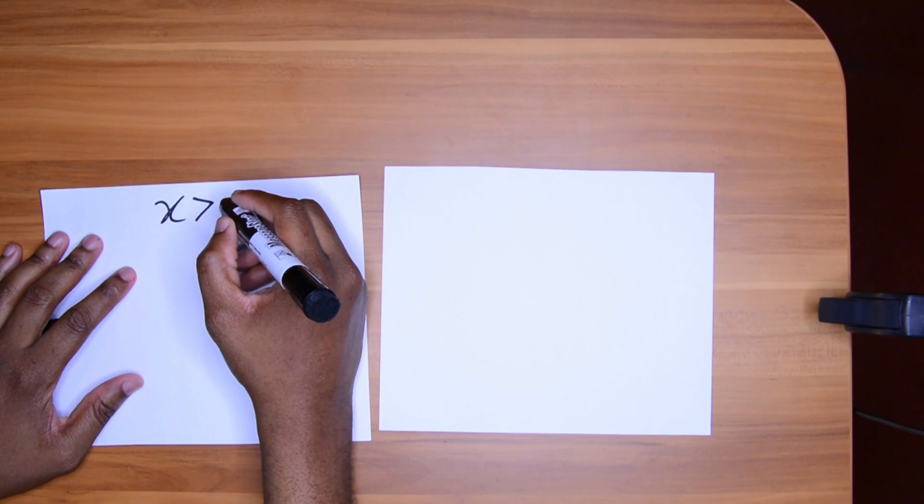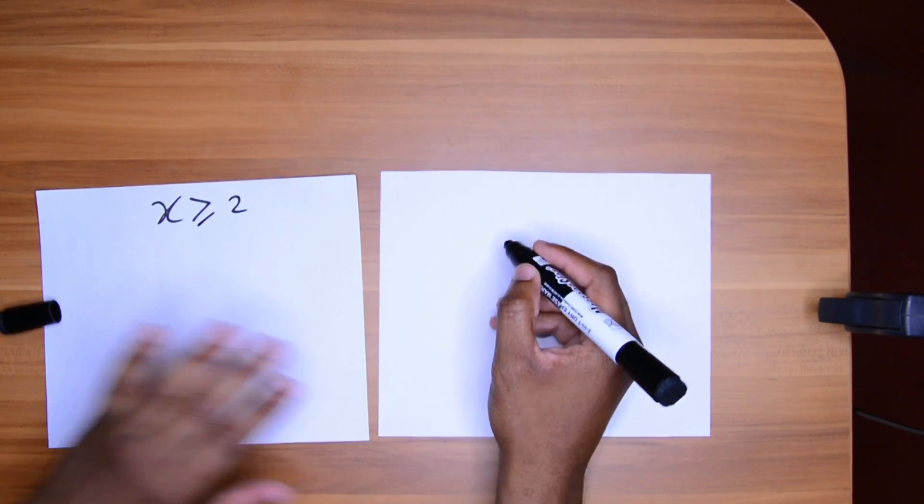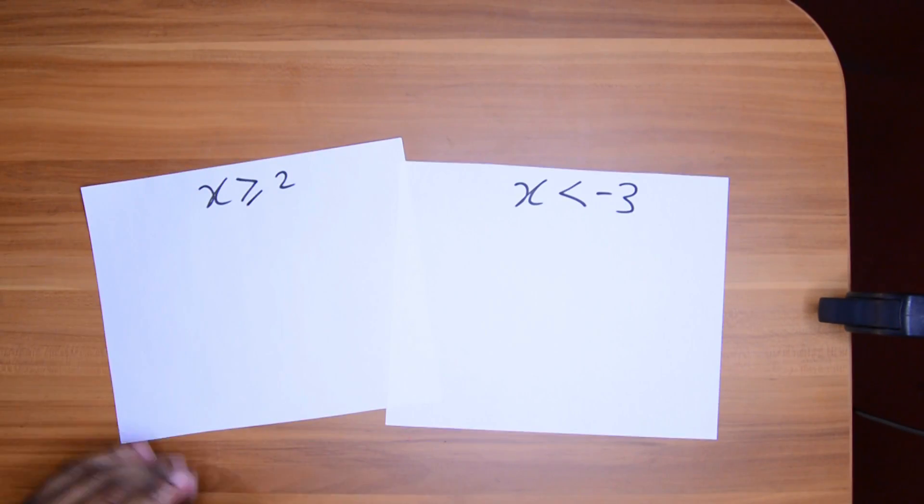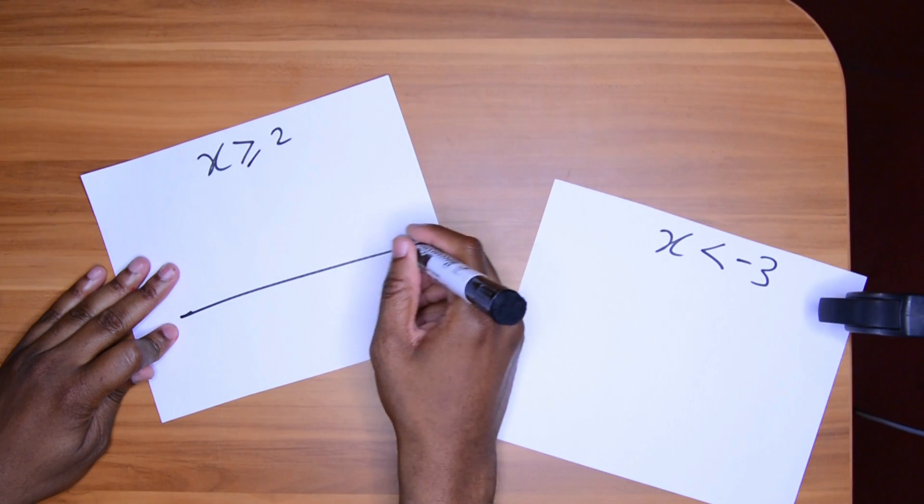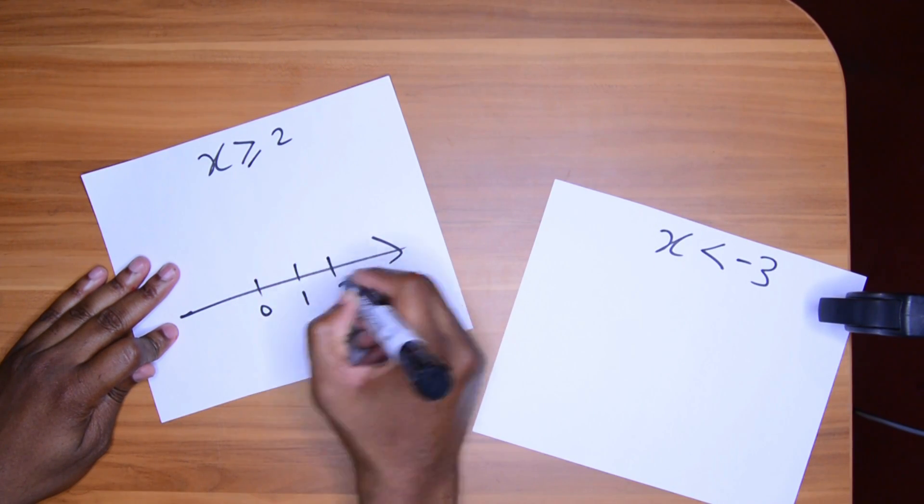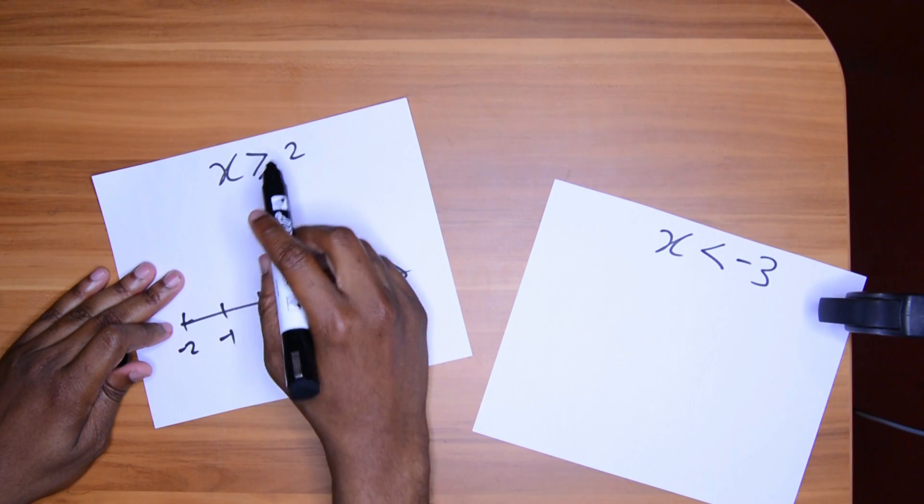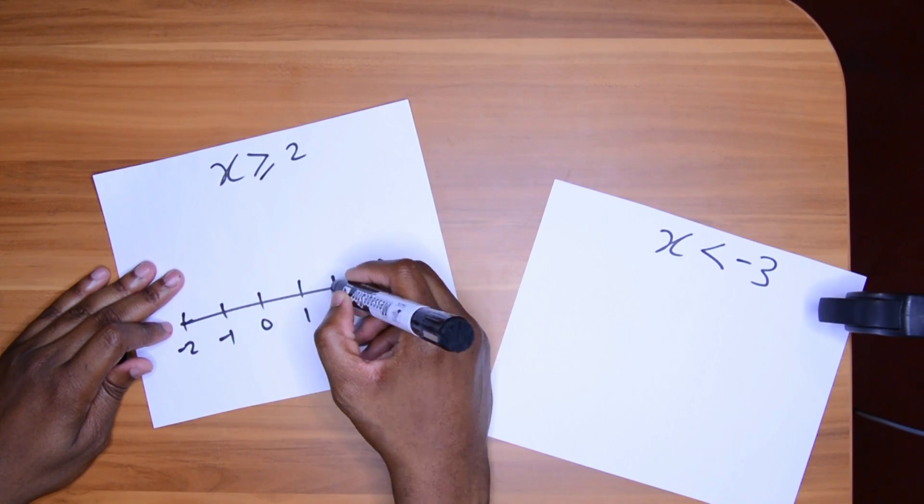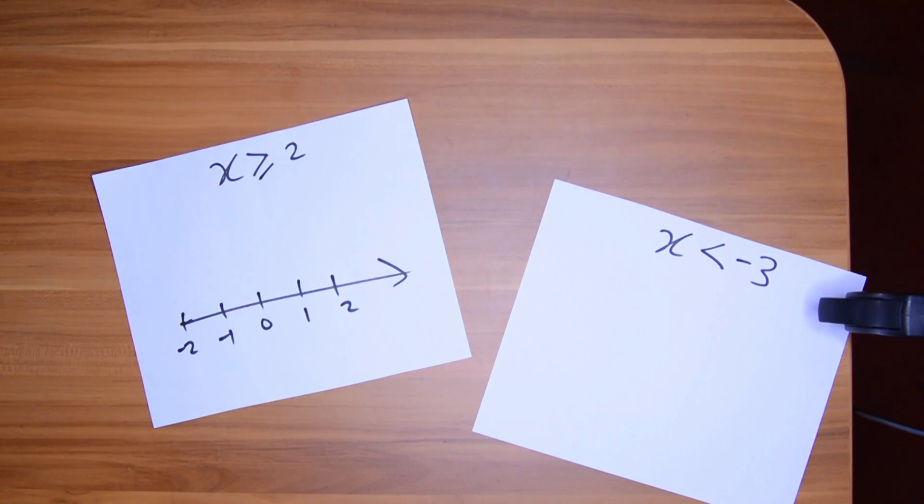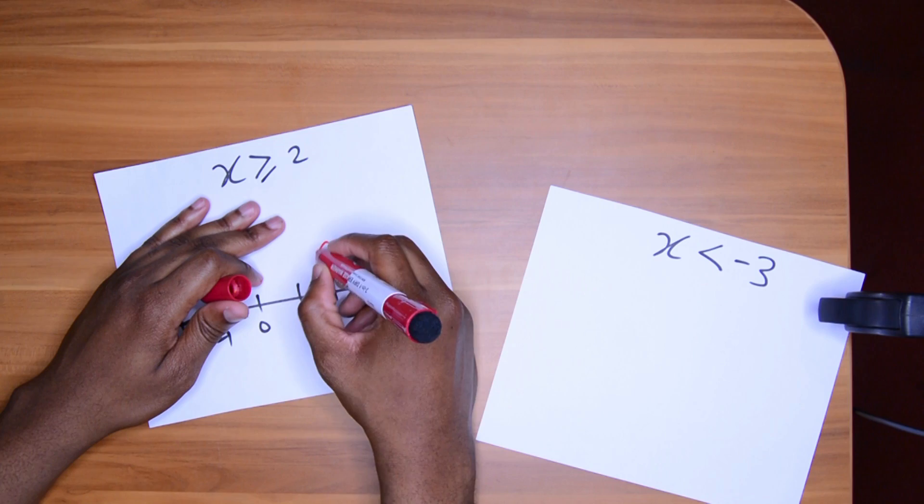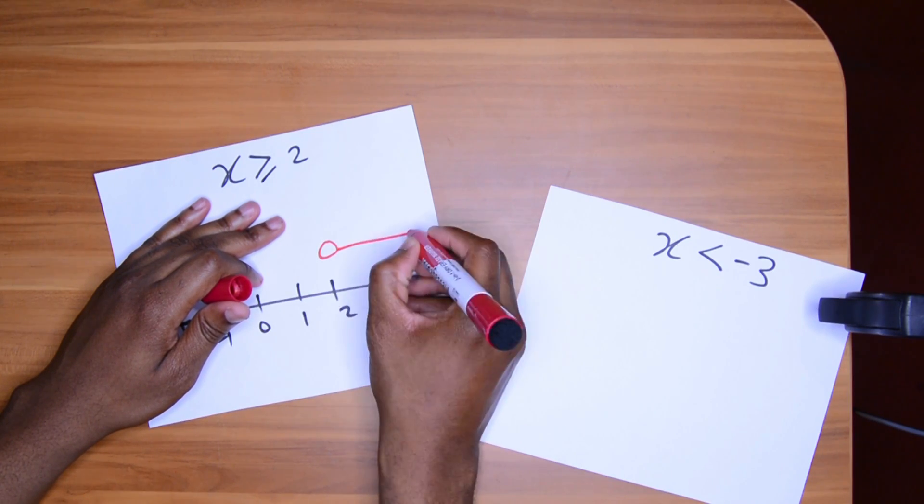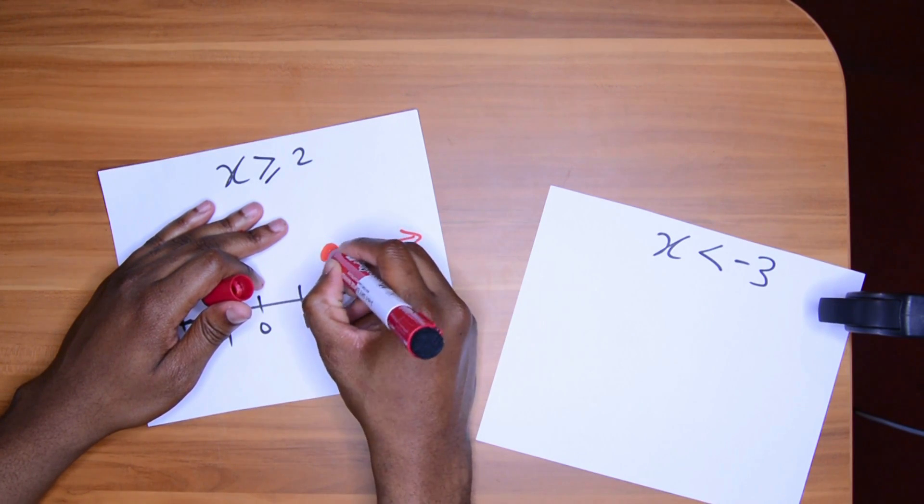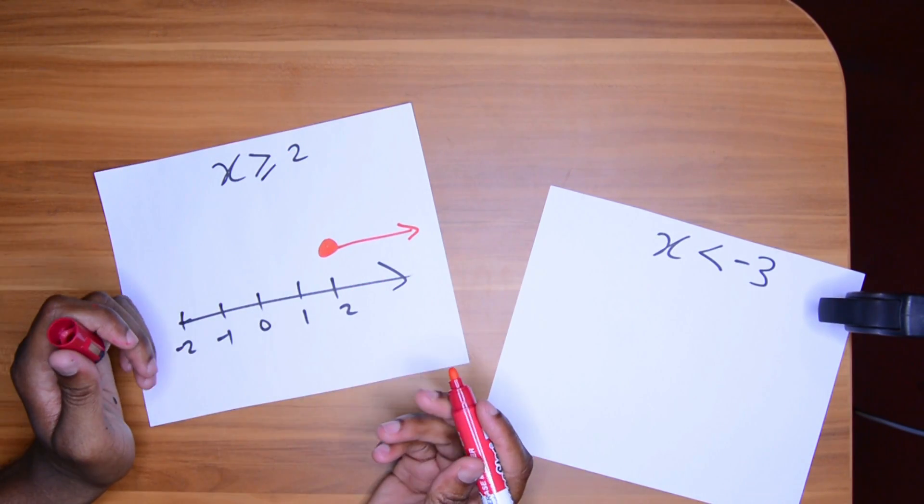X is greater than or equal to two. And X is less than negative three. If we have to express this on a number line. Zero, one, two, negative one, negative two. Since you have a greater than or equal to sign here, you can do it in two ways. You draw a circle by the two and carry your arrow going that way since it must be greater than two. Shade the circle since this is equal. As simple as that. In some cases, you may have to draw this actually on the number line.